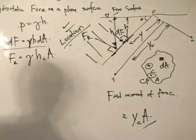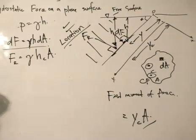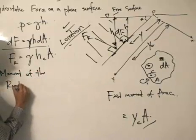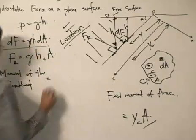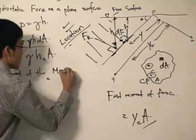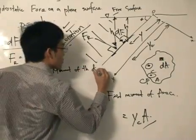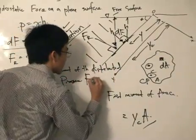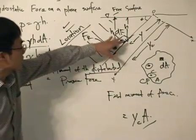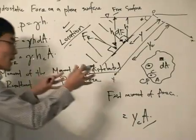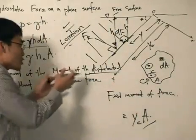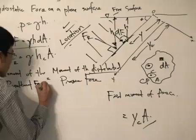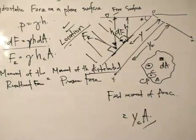This is analogous to taking moments about a certain axis, except this time we have introduced the concept of the hydrostatic force. The statement we have is: the moment of the resultant force Fr equals the moment of the distributed pressure force. The pressure force is distributed among all the small dFs. We sum up the individual moments of the distributed pressure force and equate that to the moment of the resultant force.